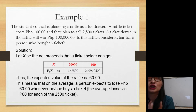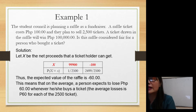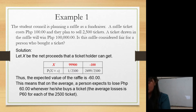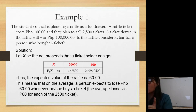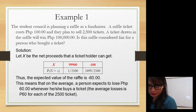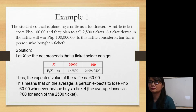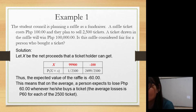To answer that, first we need to identify the expected value. Let x be the net proceeds that a ticket holder can get. So x will be 99,900 and the other value will be negative 100. Why is the value negative 100? What do you mean by negative 100?